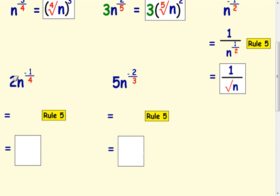Okay, let's go over to this one. 2n to the negative 1 quarter. So, this is another example of where does the 2 go at the top or the bottom. And again, what you need to try and think of it is 2 over 1 times 1 over n to the power of quarter. And that should help you.